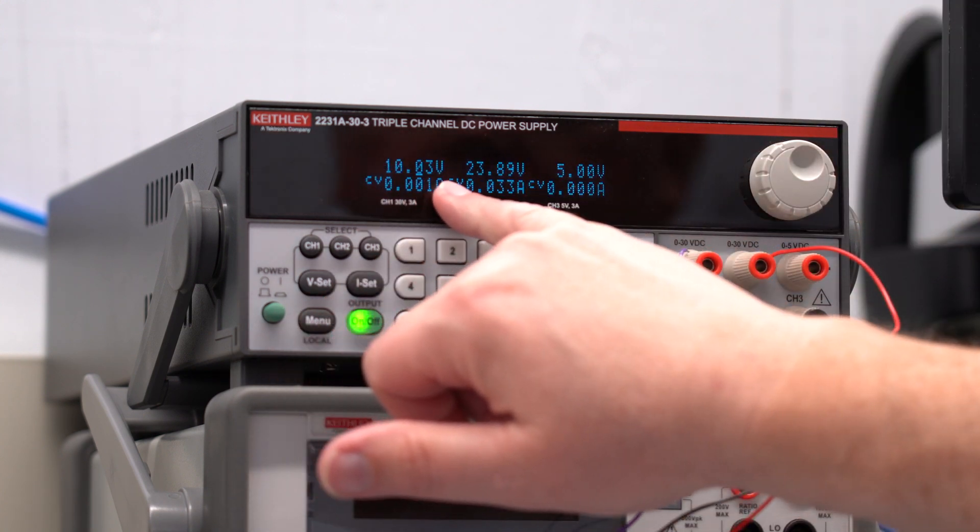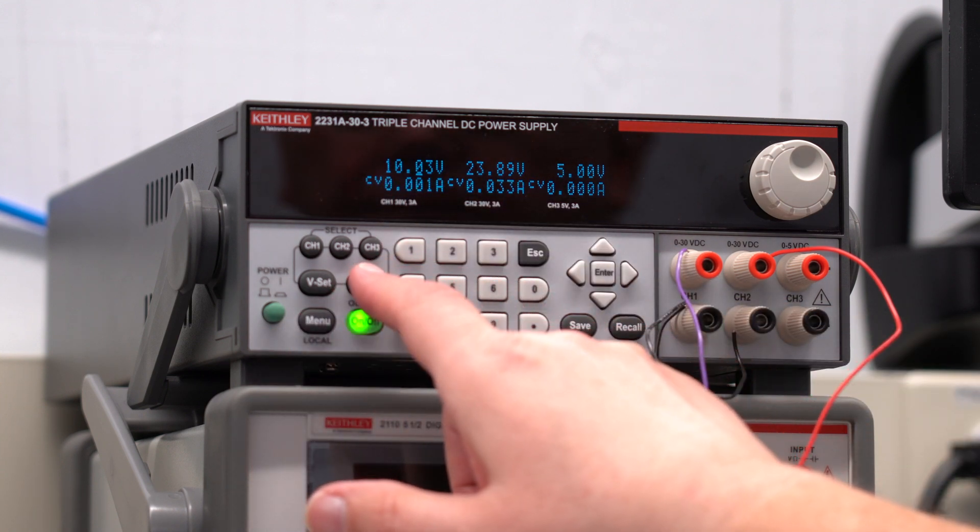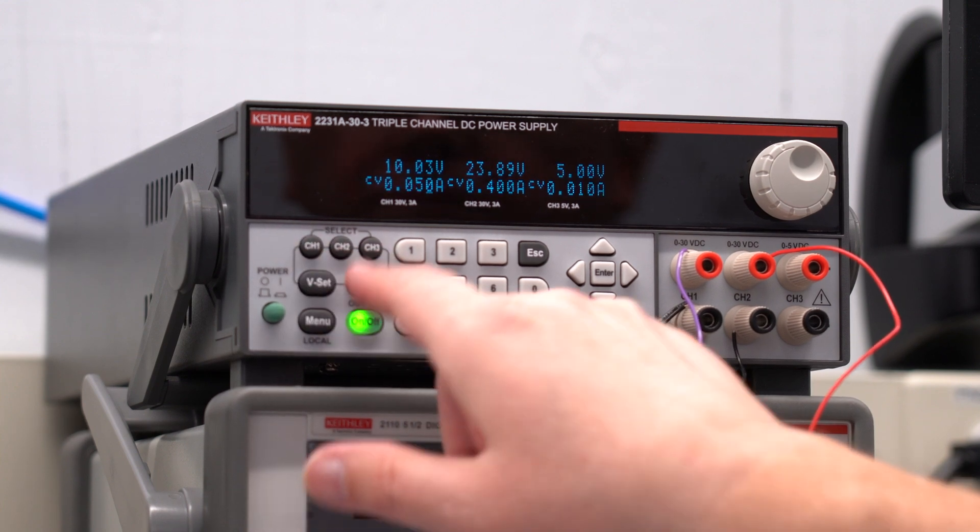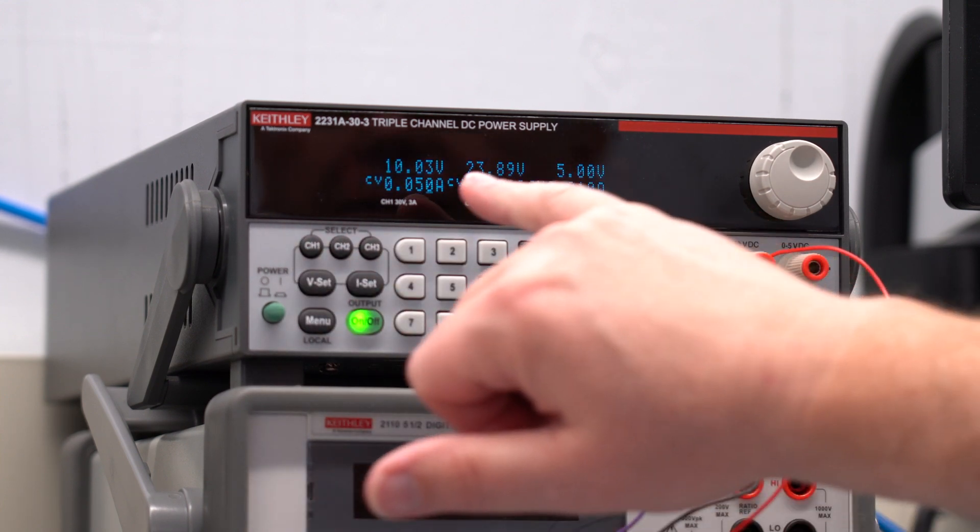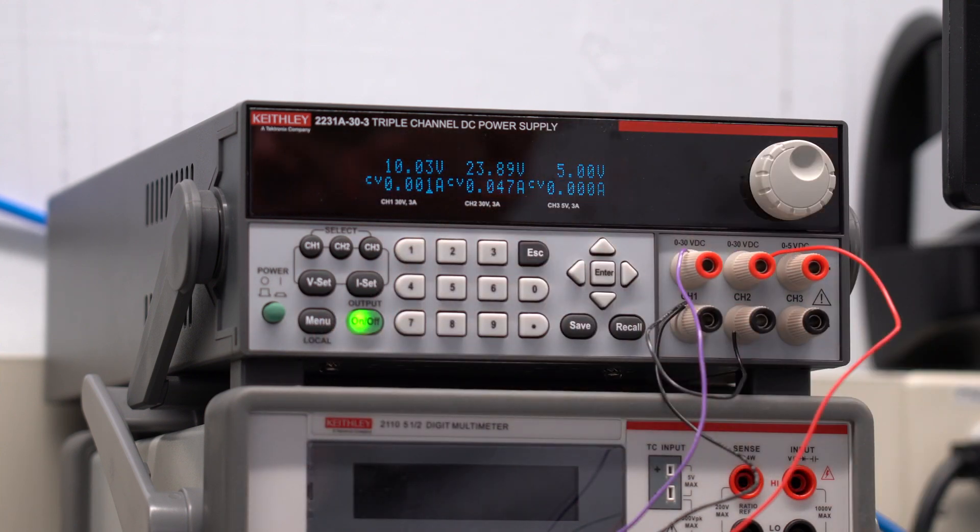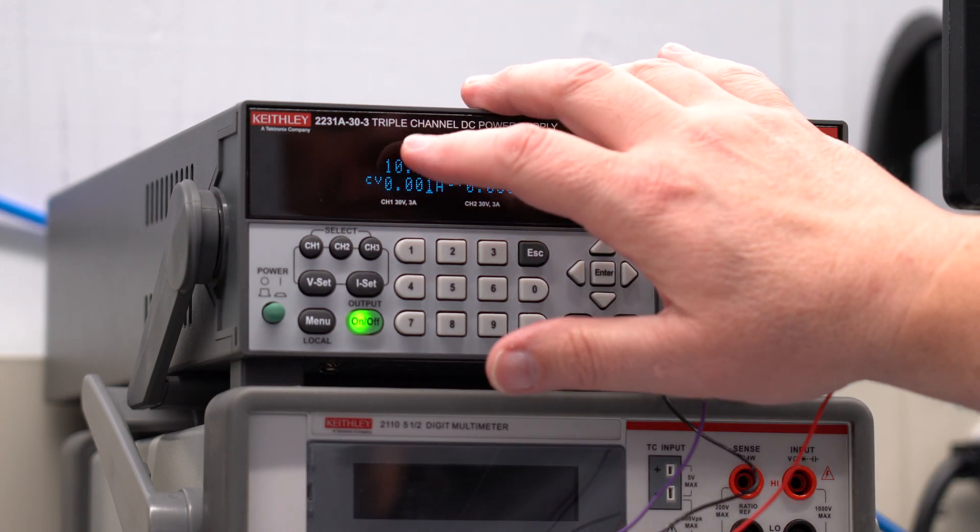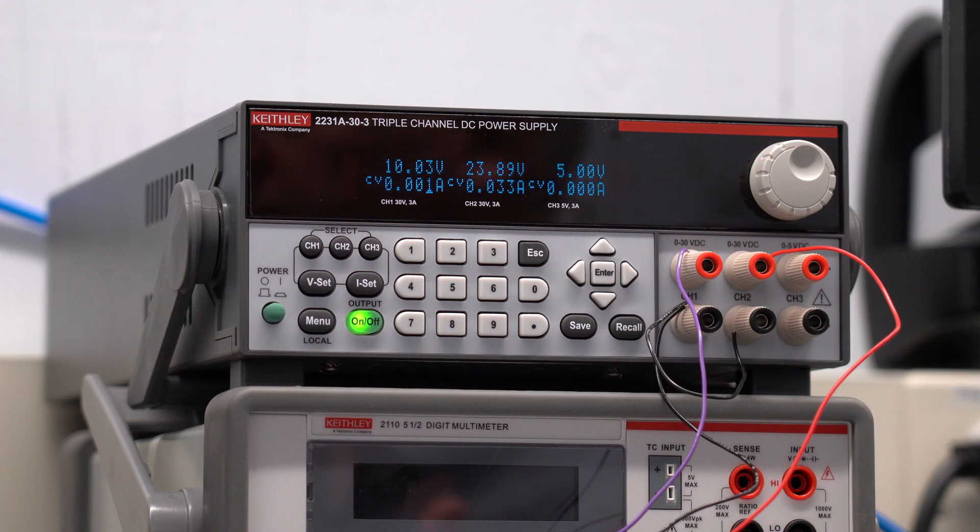And you'll see down here that it's got the letter CV. That stands for constant voltage. So what I did was on channel 1, I would have set the current to a limit value of 50 milliamps, 0.05 amps. And if the current starts to get too high, it'll automatically drop down this voltage so we never get more than 50 milliamps flowing through the wires on that channel.